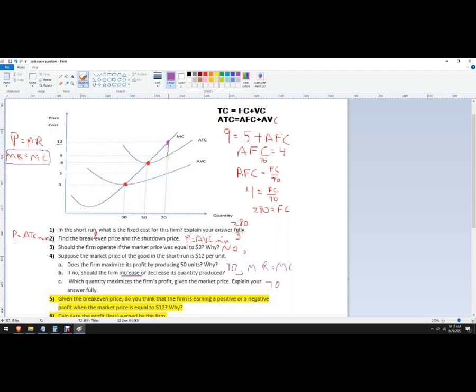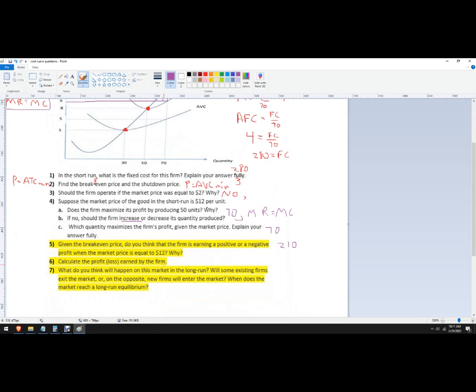Given the breakeven price do you think that the firm is earning a positive or negative profit? Okay so we know that they're earning positive profits. In fact we actually know how much profit they're earning. So they're going to earn three dollars per unit that they sell. Because if you follow this down to where it hits average total cost, the average total cost of producing 70 units is 9. But we're going to sell them for 12. So we're going to make three dollars per unit. So we can multiply three times 70. That's the area of this big rectangle here. And so that would be three times 70 which would be 210.